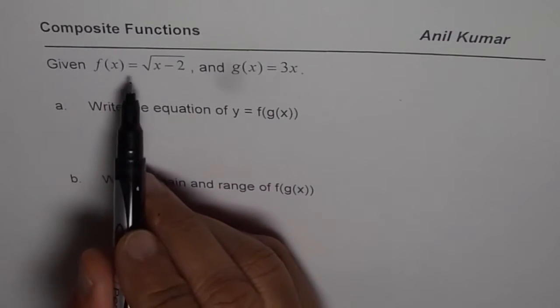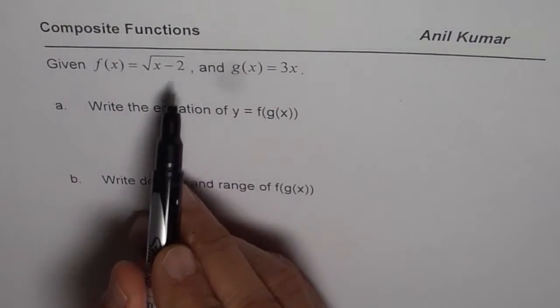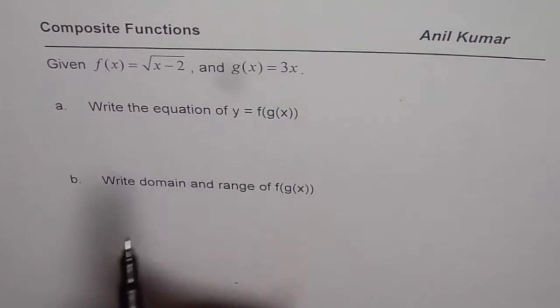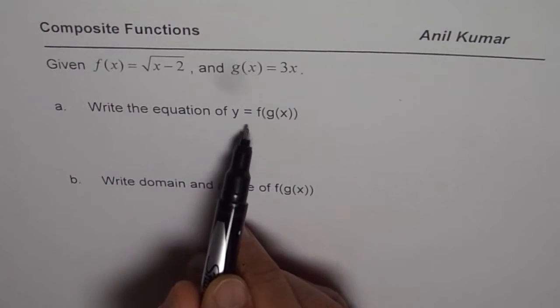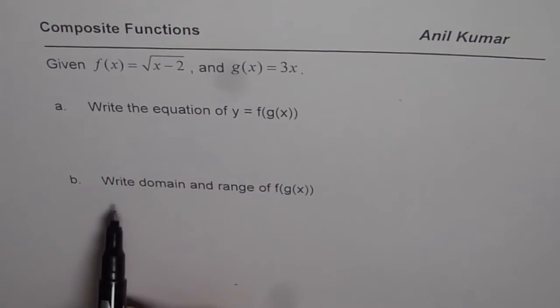We are given f(x) equals square root of x minus 2 and g(x) equals 3x. We need to write the equation of y equals f(g(x)) and write the domain and range of that function.